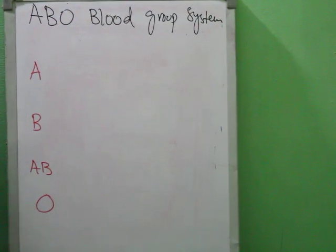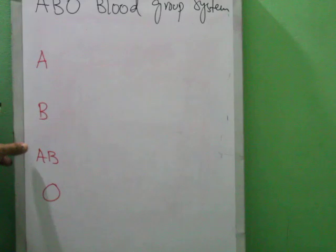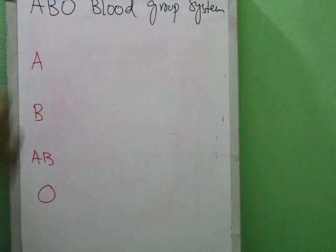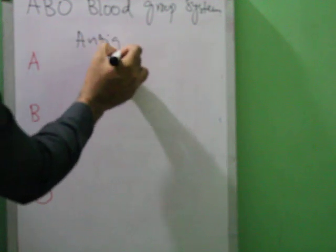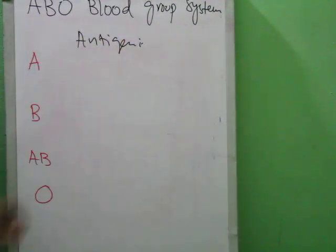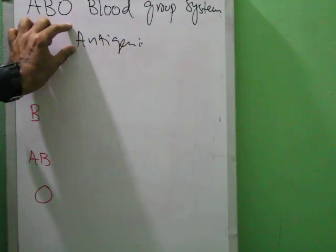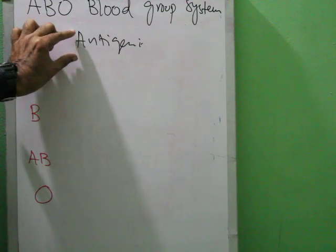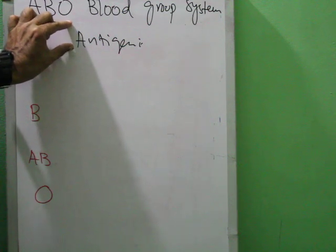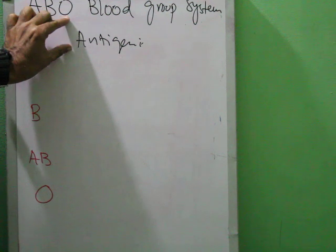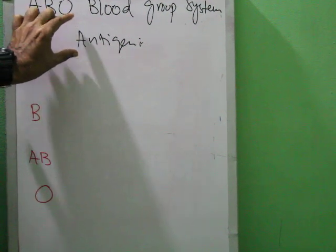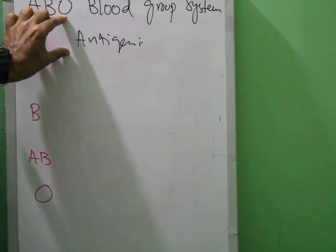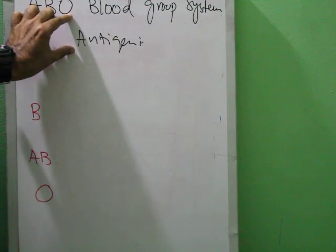There are four blood groups: A, B, AB, and O. Before understanding all of this, we should know two things. First, antigens — antigens are substances which are present on the surface of RBCs, which trigger the WBCs to come and destroy any infection or pathology in the body.